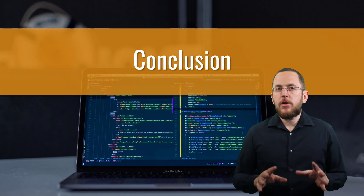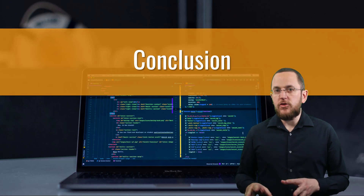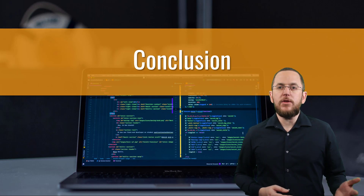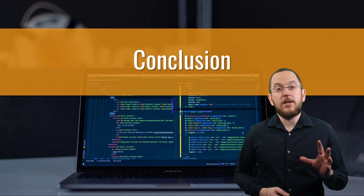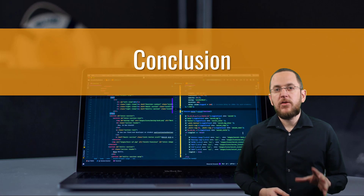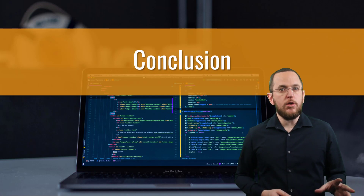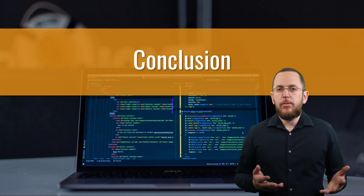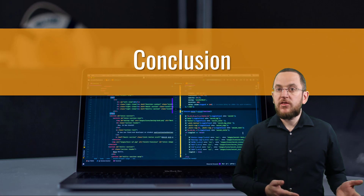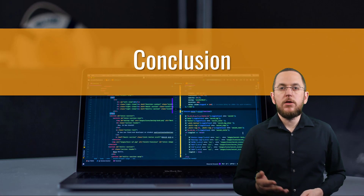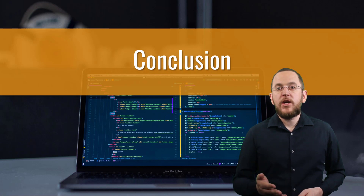If your table model doesn't provide such a column, you can use Hibernate's @DiscriminatorFormula annotation. It expects an SQL snippet that returns the discriminator value for each record. Hibernate includes this snippet in the SELECT statement and maps the record based on the returned discriminator value when fetching an entity from the database.